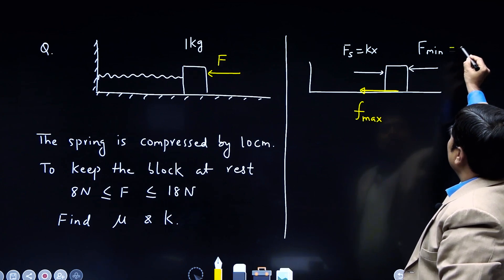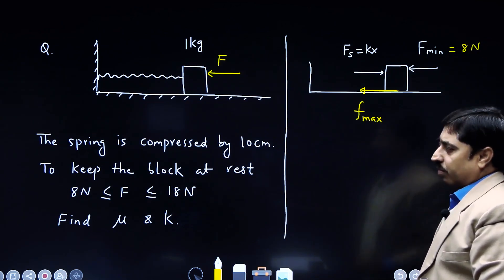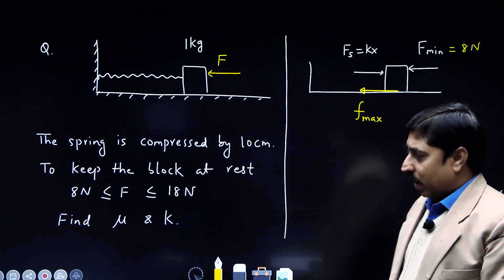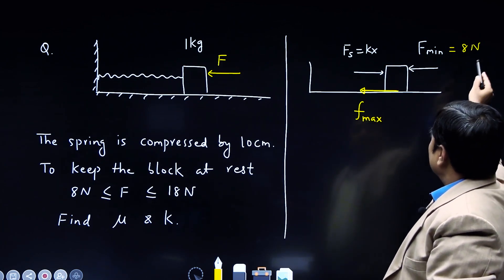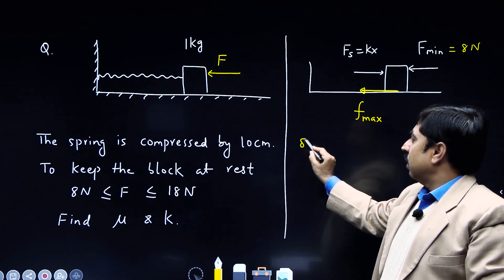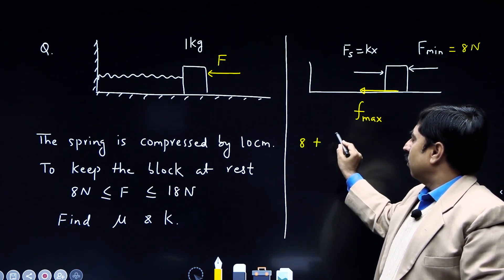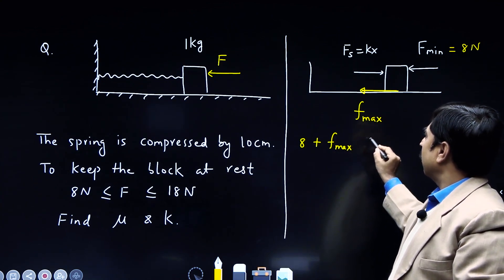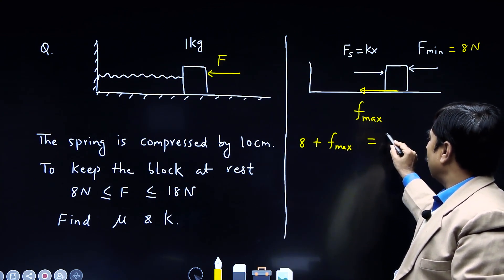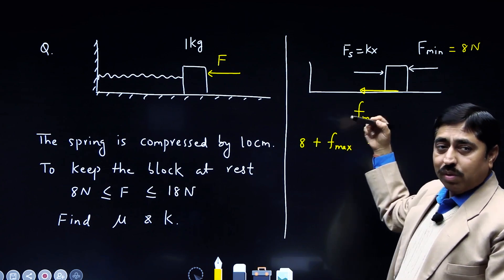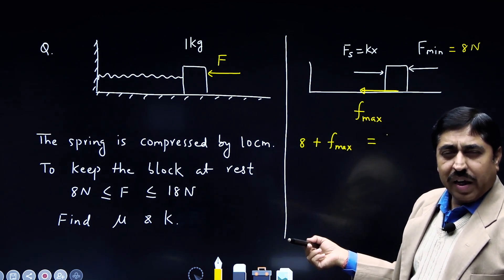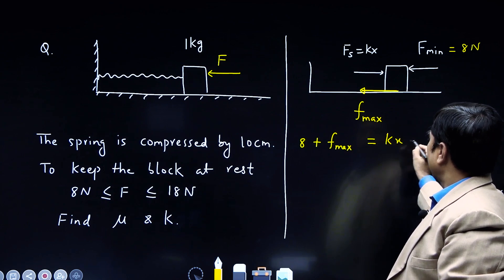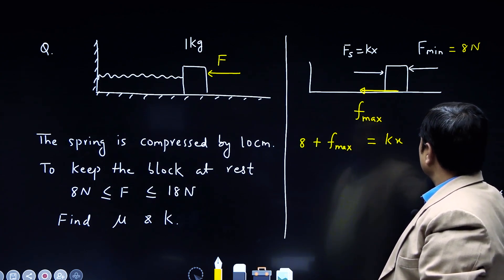As per the question this minimum force is 8 Newton. So the first equation I write is: 8 Newton plus the maximum value of static friction (the limiting friction) together equal the spring force K times X. This is my first equation.